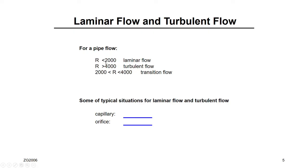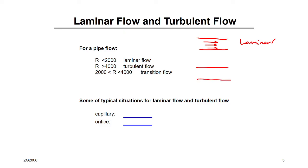If you have a low Reynolds number — less than 2,000 — you will have laminar flow. If you have a high Reynolds number, you have turbulent flow. The difference is all about the streamlines. In laminar flow, the streamlines are parallel and not intersecting. In turbulent flow, the streamlines are chaotic and random.